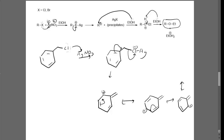Finally, we get to the last resonance contributor, which is the least substantial. Our only other option to form another contributor is moving these electrons from this double bond down there, which means we've now reformed our aromatic ring. We have a double bond there, there, and there — this is now a single bond and that is our positive charge. This is the carbocation intermediate. If you want to show ethanol coming in to attack, you can show your ethanol doing a nucleophilic attack on that carbon, which would get you to this intermediate. You then have one more step for a proton transfer.